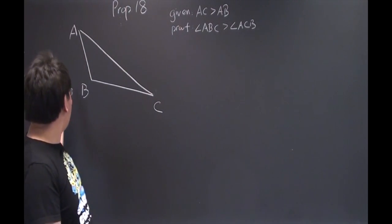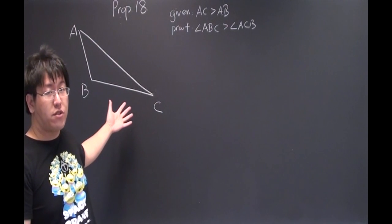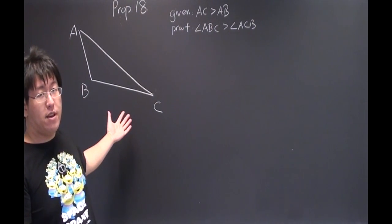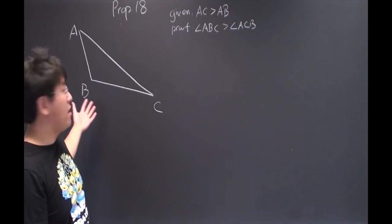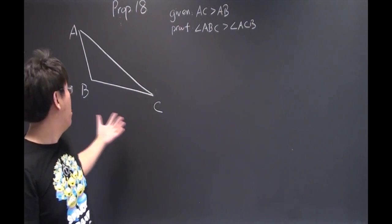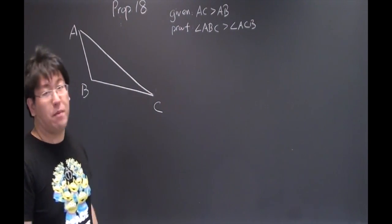So in this triangle, we have side AC which is greater than AB, and we will show that angle ABC, which is subtended by the greater side, is greater than angle ACB, which is subtended by the shorter side AB.